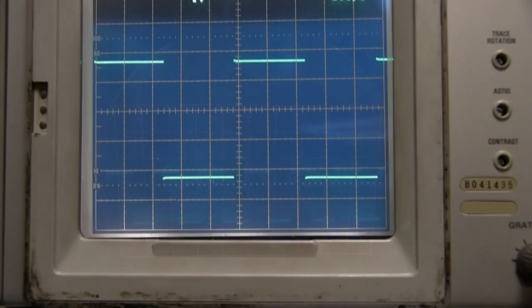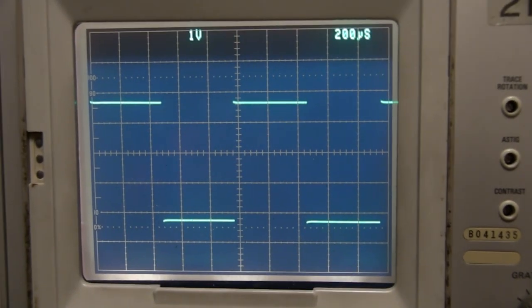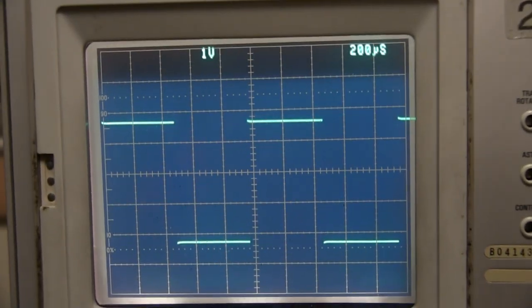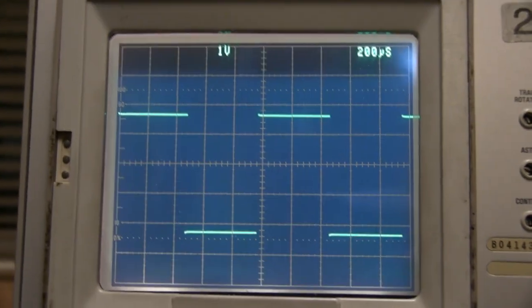Newer CRTs had internal graticules on the phosphor layer, so they have no parallax. Note that as the camera moves, the trace does not move relative to the graticule.